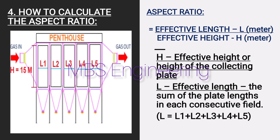Please refer to the ESP schematic layout for better understanding. H is marked in the schematic layout — H is the effective height or height of the collecting plate. L is also marked in the schematic layout — L is the effective length, the sum of the plate lengths in each consecutive field. It means effective length L equals L1 + L2 + L3 + L4 + L5.